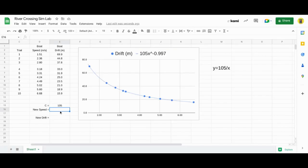We need to figure out what would be the new drift. X represents the speed, so y represents the drift. So basically, all I'm doing is taking 105 divided by the new speed.